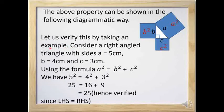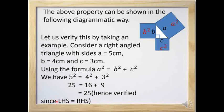Now we will verify this by taking an example. Consider a right angle triangle with sides a = 5 cm, b = 4 cm, and c = 3 cm. Using the formula a² = b² + c², we have 5² = 4² + 3². We know 5² = 25, 4² = 16, and 3² = 9. Since 16 + 9 = 25, the left-hand side equals the right-hand side.